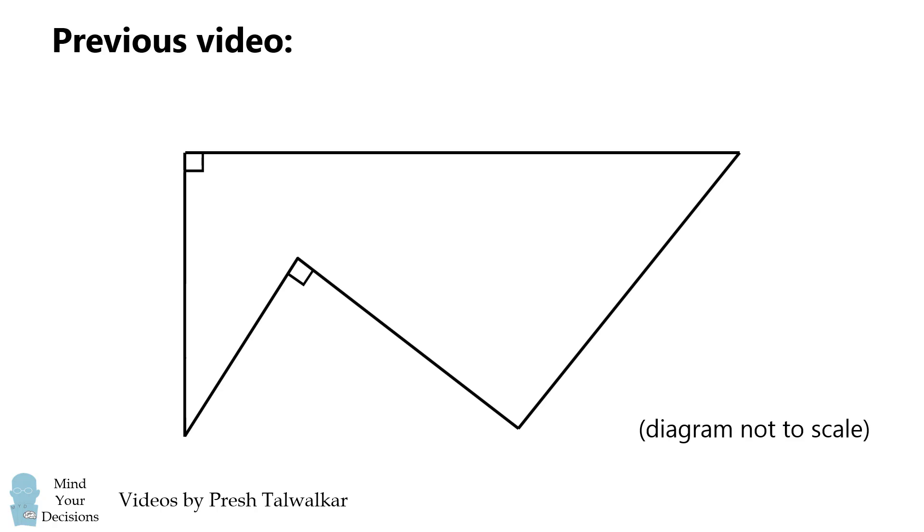The following shape has three right angles. Its side lengths are 4, 3, 4, and 5. The question was to solve for the length of the last side labeled X.